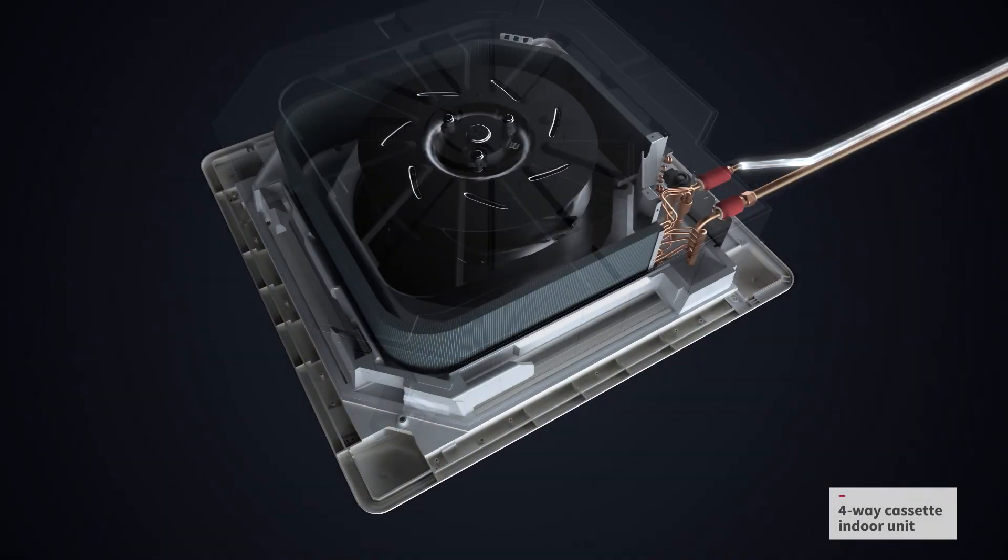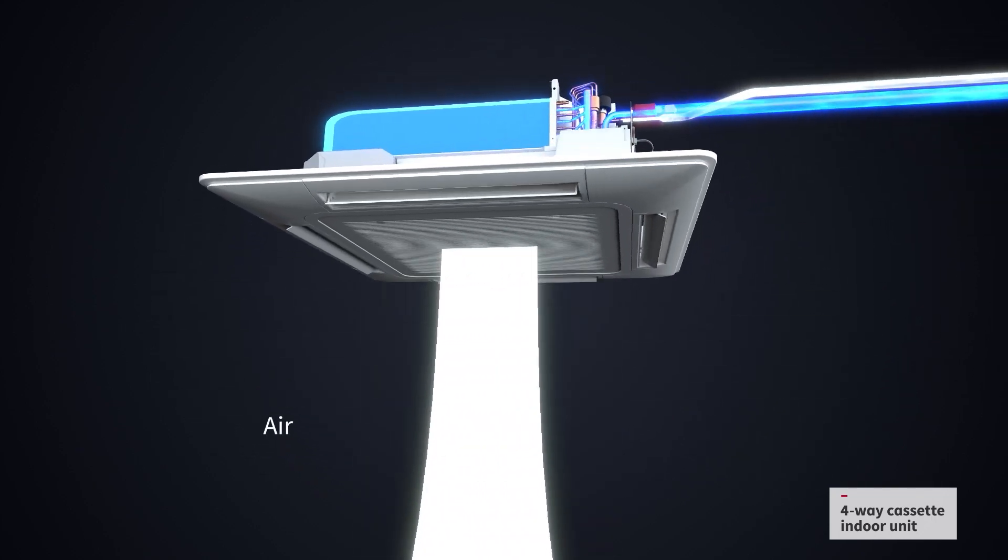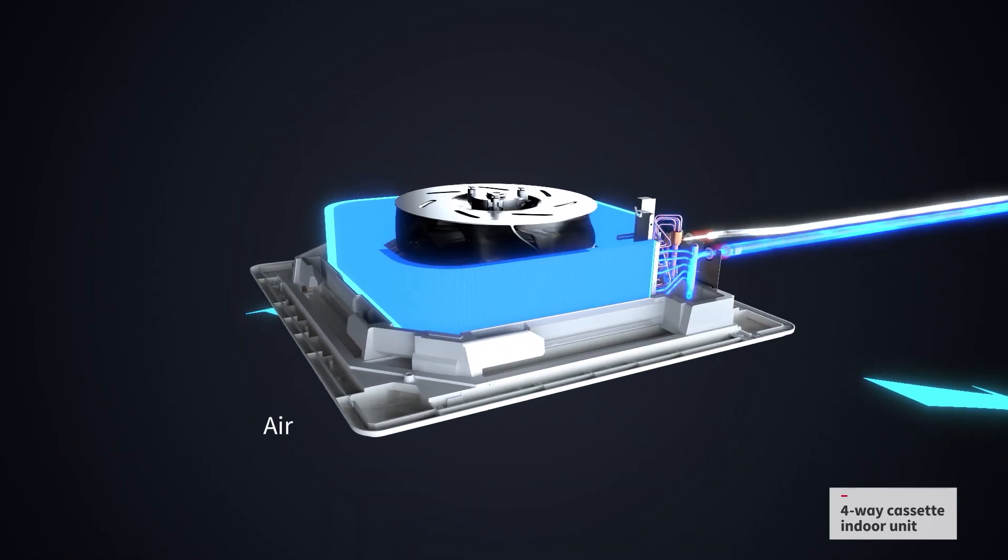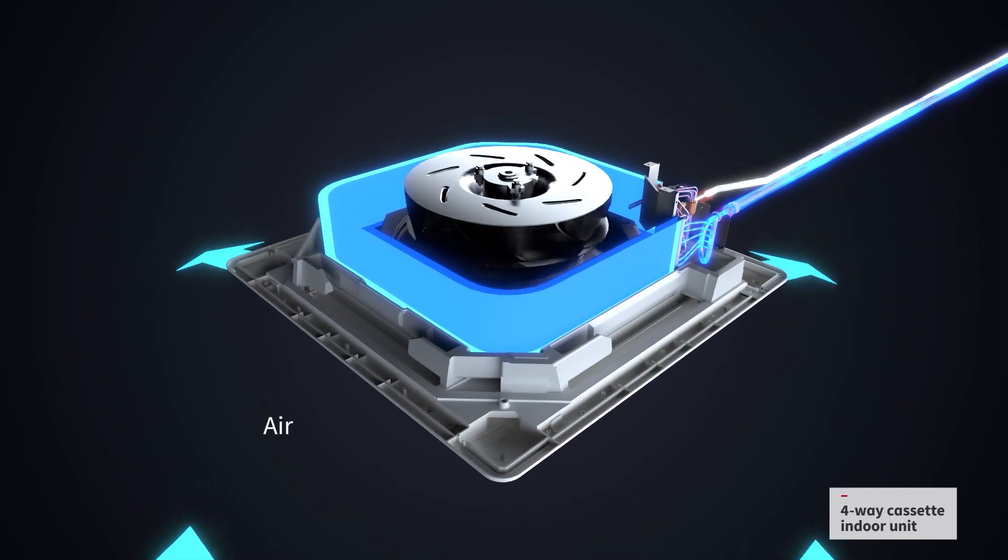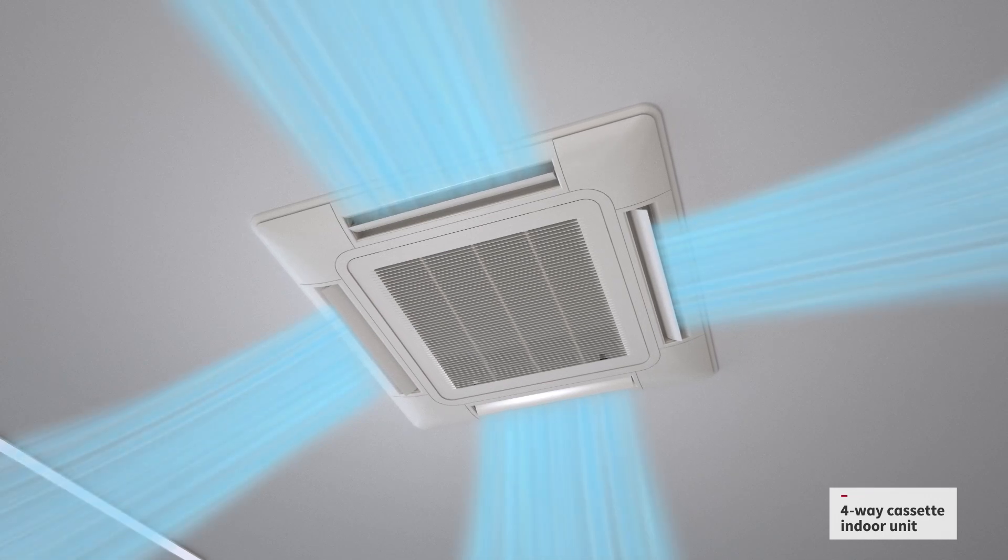The refrigerant passes through an expansion valve in each indoor unit, which controls how much refrigerant is allowed into each unit. Here, heat is exchanged between the indoor room air and air from the indoor unit.